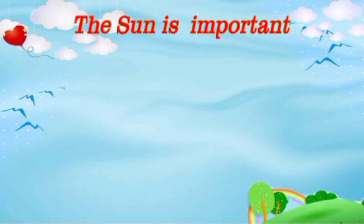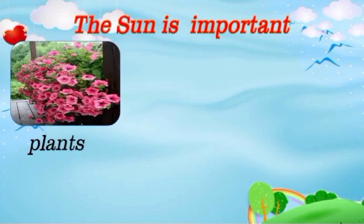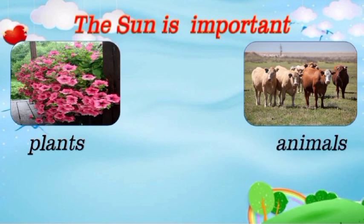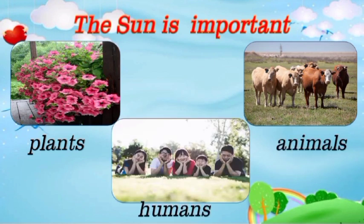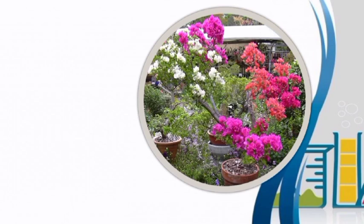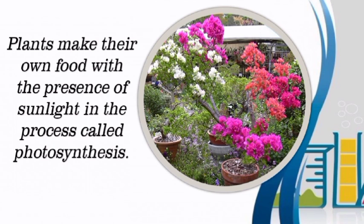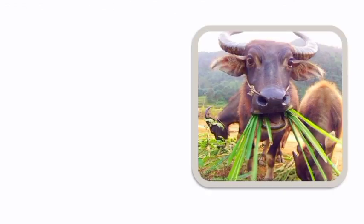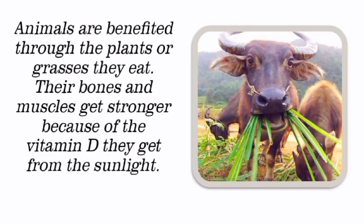The sun is important to plants, to animals, and to humans. Plants make their own food with the presence of sunlight in the process called photosynthesis. Animals are benefited through the plants or grasses they eat. Their bones and muscles get stronger because of the vitamin D they get from the sunlight.